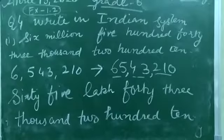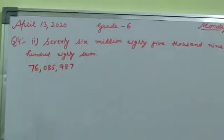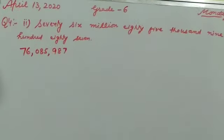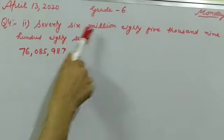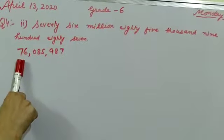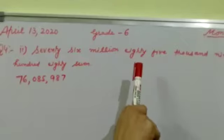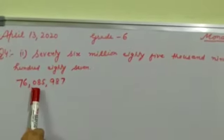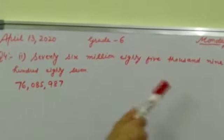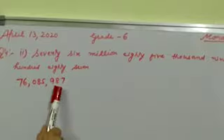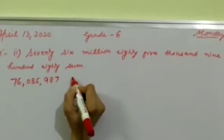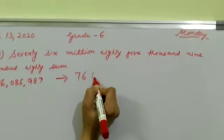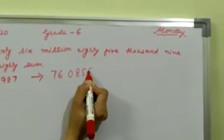Now come to the next part, question number 4 second part. The number is 76,085,987. We will write it as 76,85,000. Three digits are 0, 85, 000. Then 987. After that we will put the commas according to the Indian system.